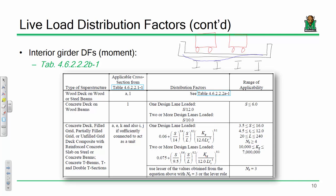These equations are applicable only within a given range, but that range is incredibly robust. Girder spacing must be between 3.5 and 16 feet — a pretty big range. Slab thickness must be between 4.5 and 12 inches. Span length must be between 20 and 240 feet. Virtually any real bridge will fall within these limits.